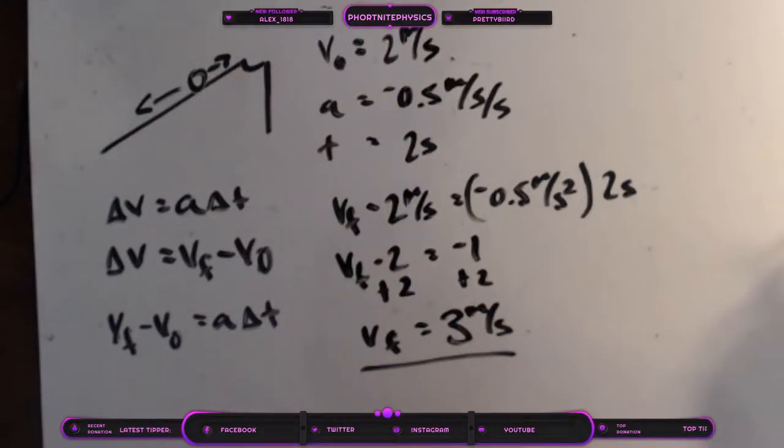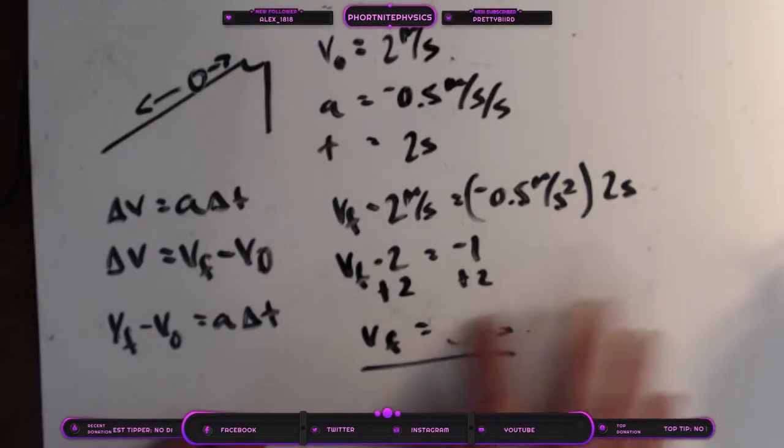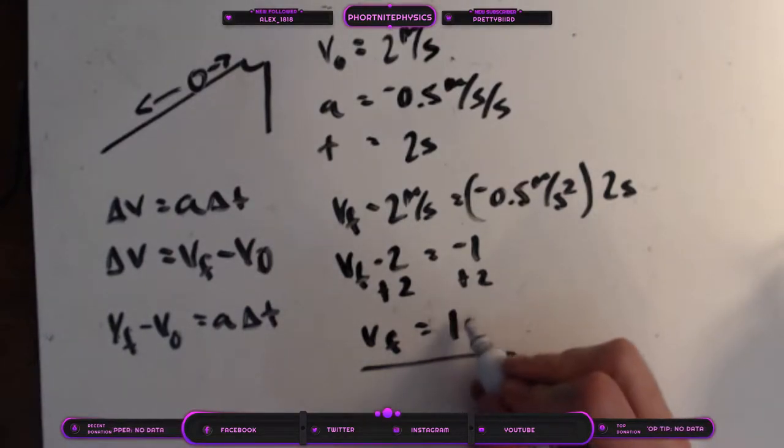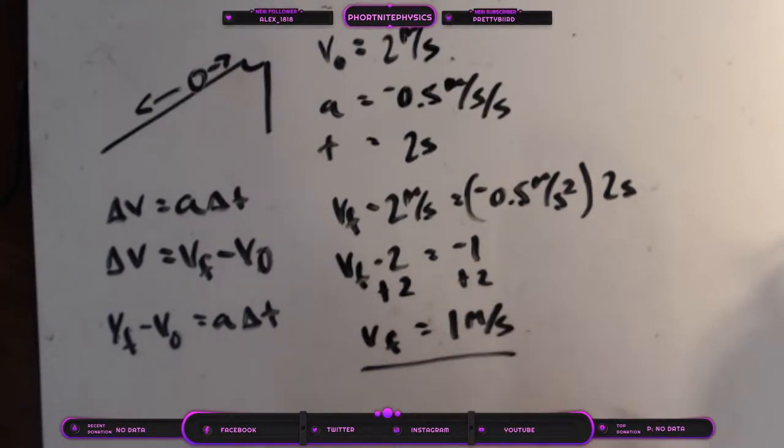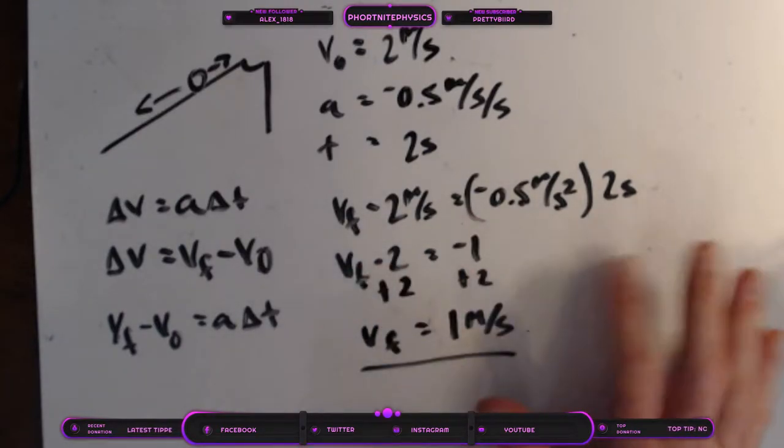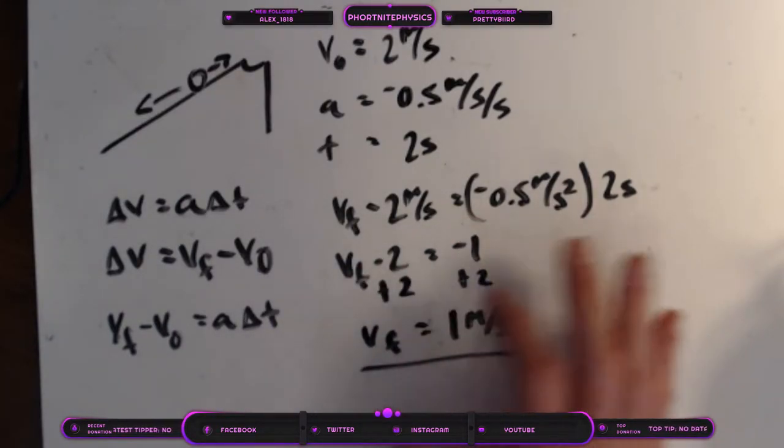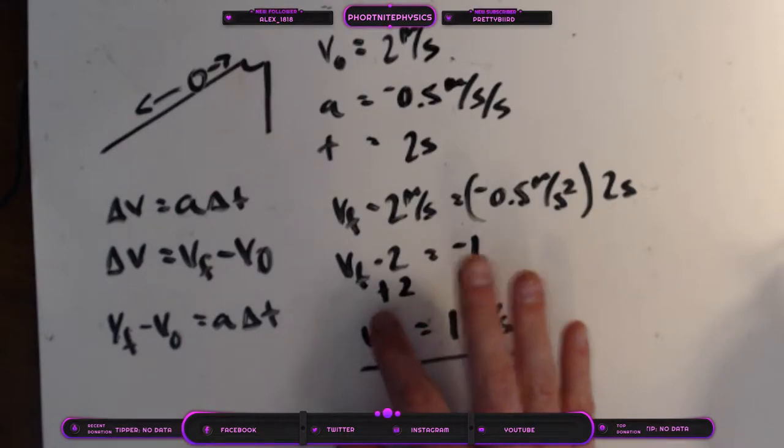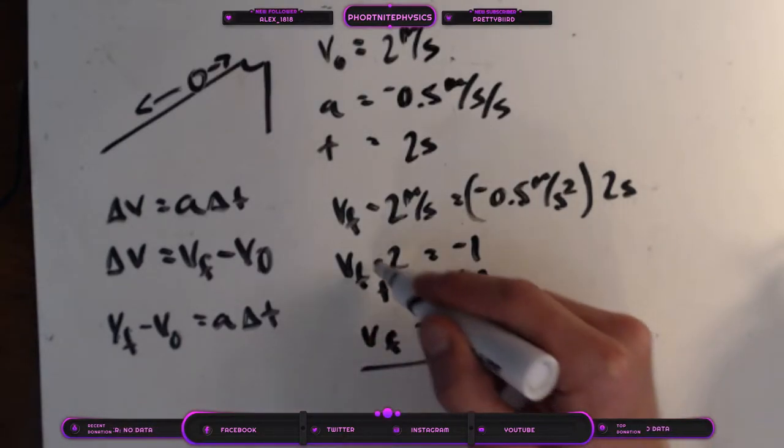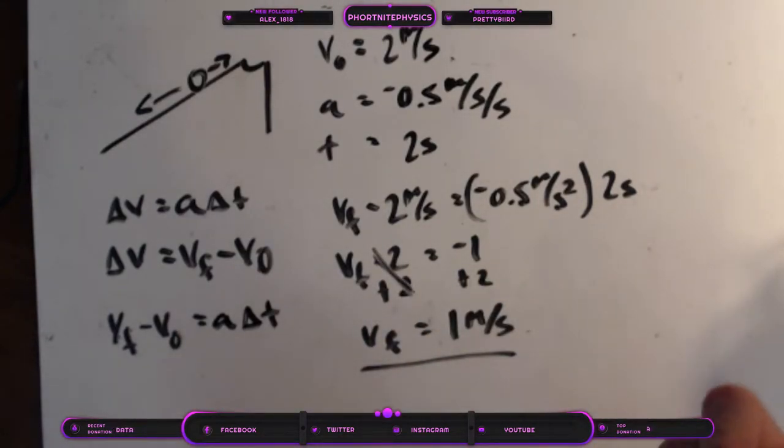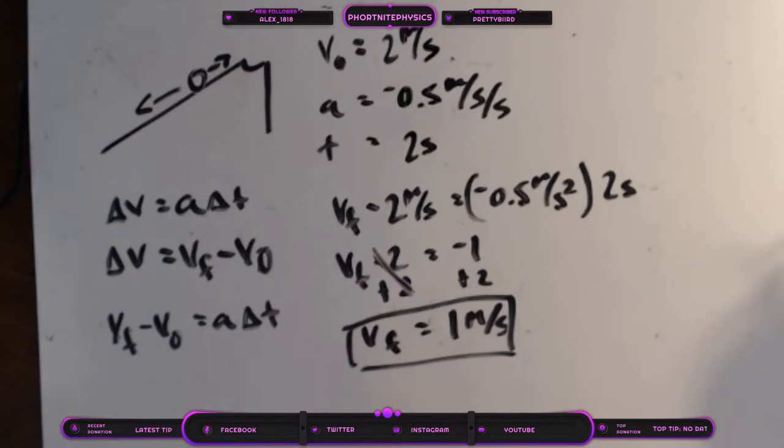Nope, I did my math wrong. It's 1 meter per second. I apologize for that. So Vf minus 2 equals negative 1. We add 2 to both sides. That gets rid of this right here. You're 100% right, Brian. I figured that out. I knew that was incorrect. So there we go.